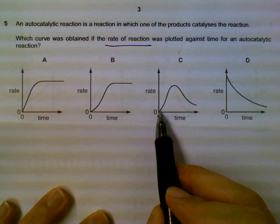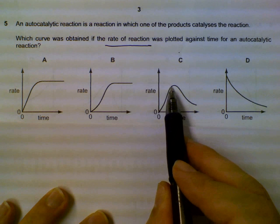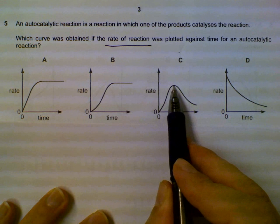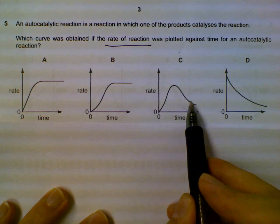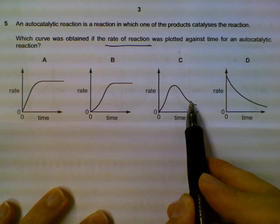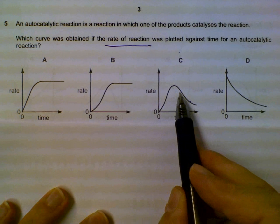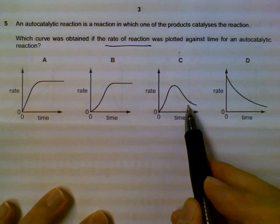But then as we get the catalyst produced, it actually speeds up the reaction and it actually hits the maximum during somewhere in the middle. Why does it go down then since we have more and more catalysts? Because don't forget we are using up our reactants. So even though we have a lot of catalysts coming out, our reactants are being used up. So the rate of reaction has to go back to zero.